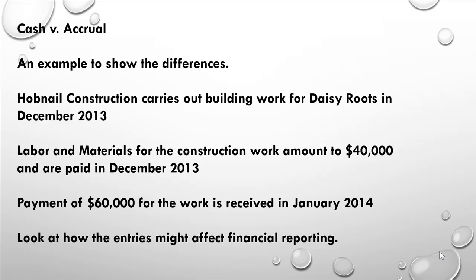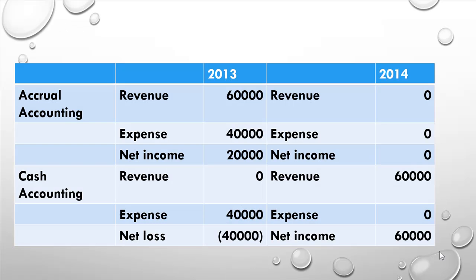Let's look at the differences between cash and accruals accounting using a transaction example. Hobnail Construction carries out building works for Daisy Roots in December 2013. Labor and materials amount to $40,000, paid in 2013. But the payment for the work — the revenue — is not received until January 2014. Under accrual accounting in 2013, we record both the revenue and the expense, giving a net income of $20,000.